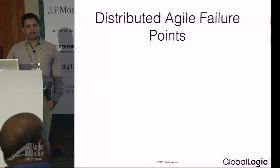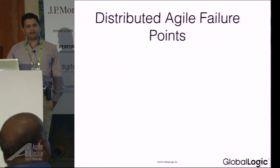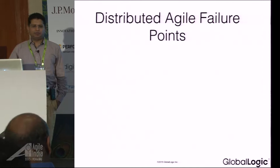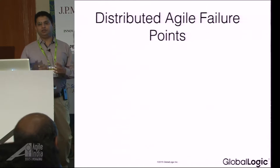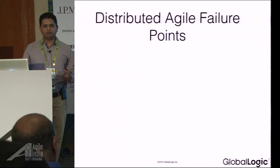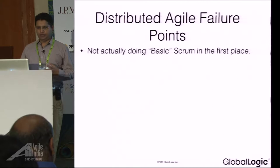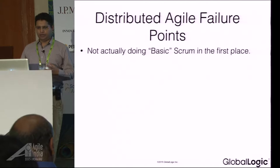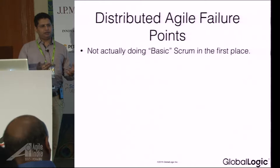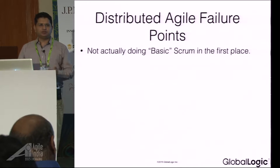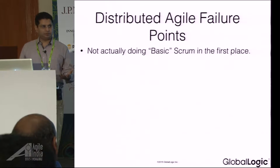Before we start talking about different patterns, let's see what the failure points are. What I've seen is that we started blaming the distributed way of working, but actually there are basic problems in the way you are working right now. The first thing is not actually doing basic Scrum in the first place — there is no retrospective, no planning meeting, and you are not measuring velocity in story points. If Scrum is not working, it is very difficult to determine if distributed Scrum is the problem.